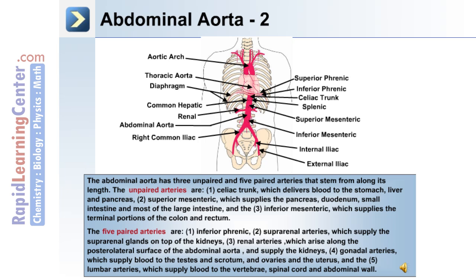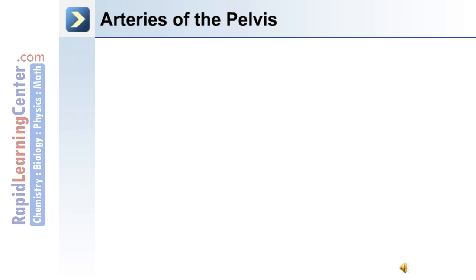There are five pairs of arteries: the inferior phrenic; the suprarenal arteries, which supply the suprarenal glands on top of the kidneys; the renal arteries, which arise along the posterior lateral surface of the abdominal aorta and supply the kidneys; the gonadal arteries, which supply blood to the testes and scrotum in the male and the ovaries and uterus in the female; and the lumbar arteries, which supply blood to the vertebrae, spinal cord, and the abdominal wall.